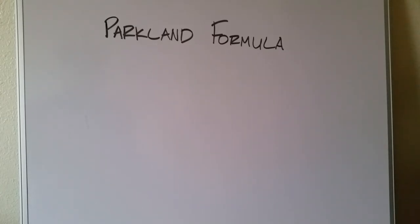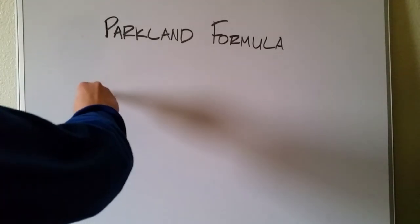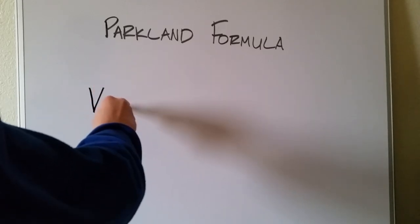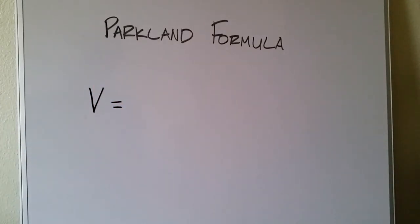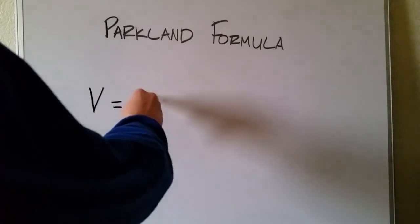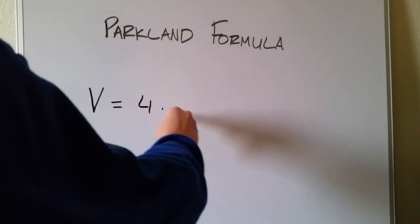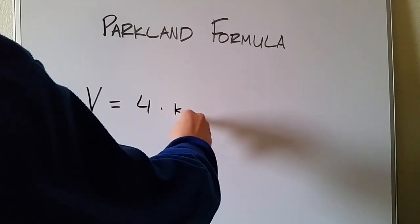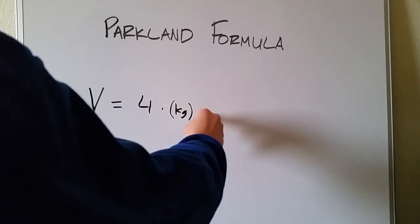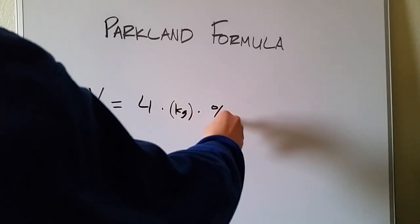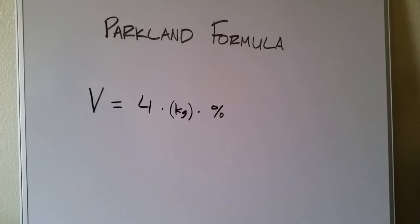If you're unsure how to calculate the rule of nines for an adult or a child, make sure you check out our videos on that, because it's a key part of this formula. The formula goes as such: volume in milliliters of fluid needed equals four times the mass of the patient in kilograms times the percentage from the rule of nines — four times kilograms times percentage.